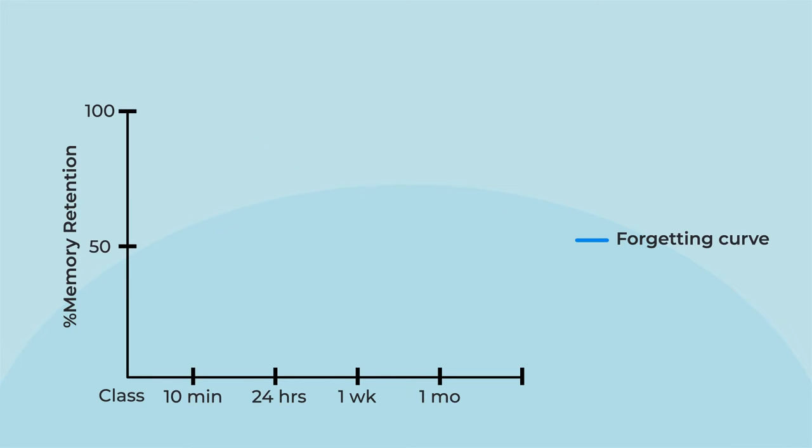This chart represents how well you remember what you learn. As you can see, as soon as you finish learning something, you begin to forget it. The more time has passed, the more you will have forgotten. A month after you learn material, you will only remember a small amount of what you've learned. This is known as the forgetting curve.